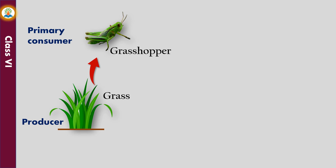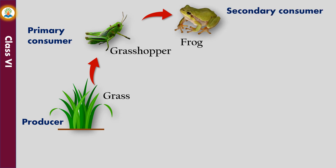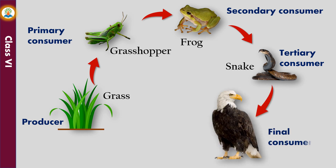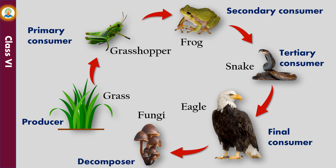The next in the sequence is a herbivore, such as a grasshopper, called a primary consumer. The primary consumer is followed by a carnivore as a secondary consumer, such as a frog. Then comes a tertiary consumer, such as a snake, and at the last level, a final consumer such as an eagle. Decomposers such as fungi consume the remaining nutrients in dead organisms.